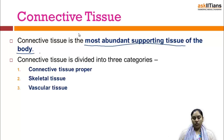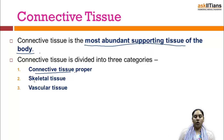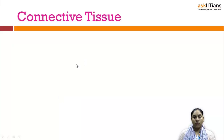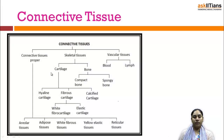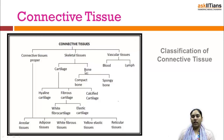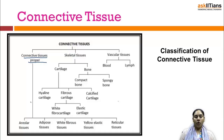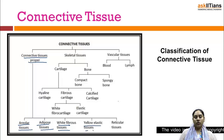Connective tissue is divided into three categories: connective tissue proper, skeletal tissue, and vascular tissue. The classification shows that connective tissue proper includes areolar tissues, adipose tissues, white fibrous tissues, yellow elastic tissues, and reticular tissues.